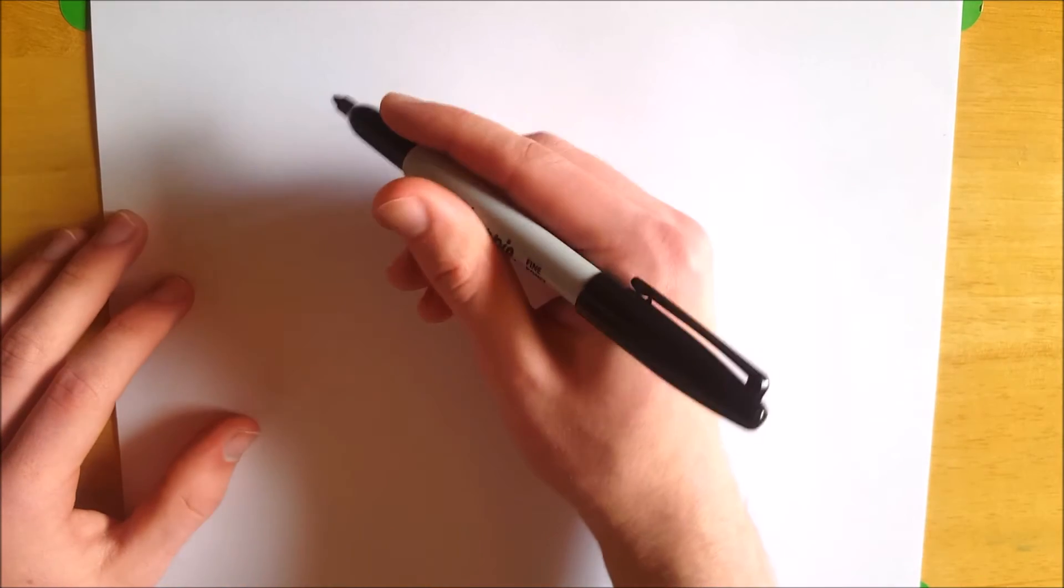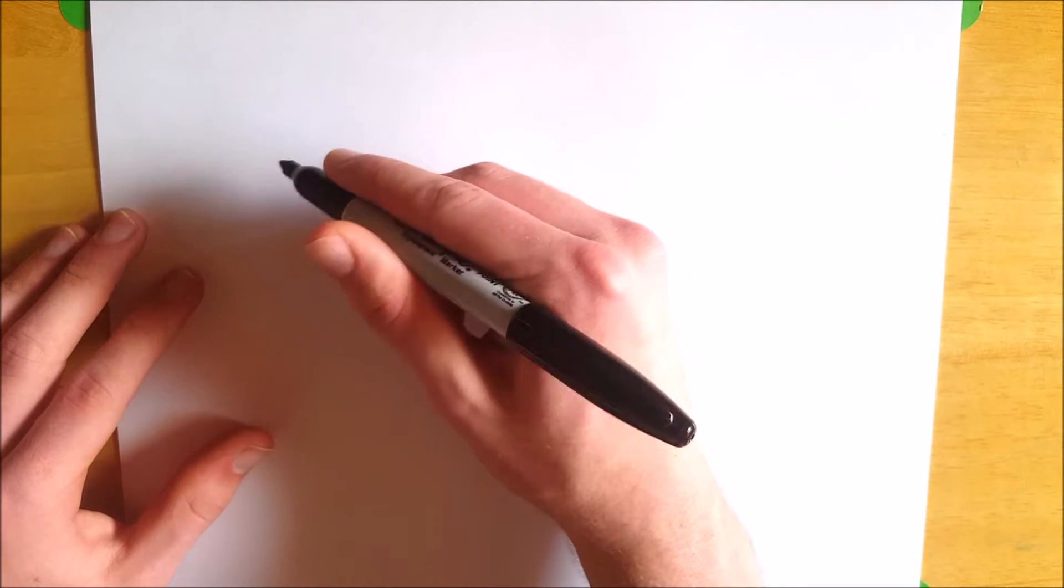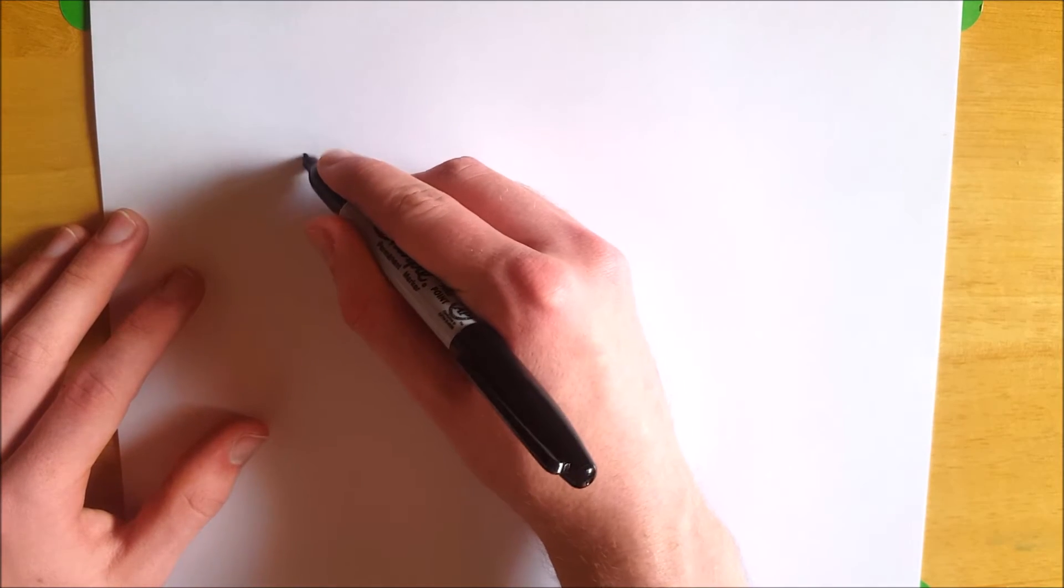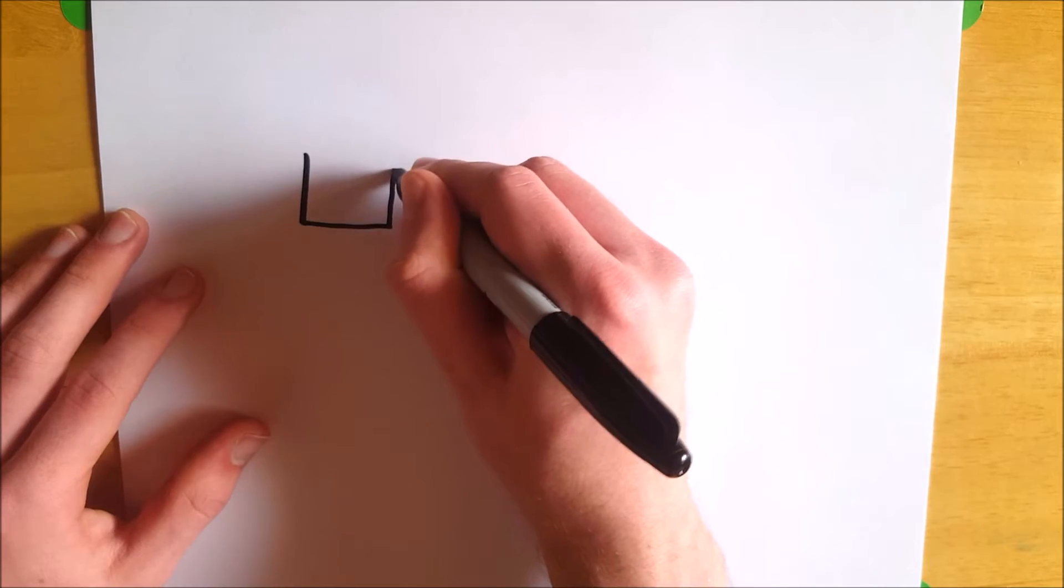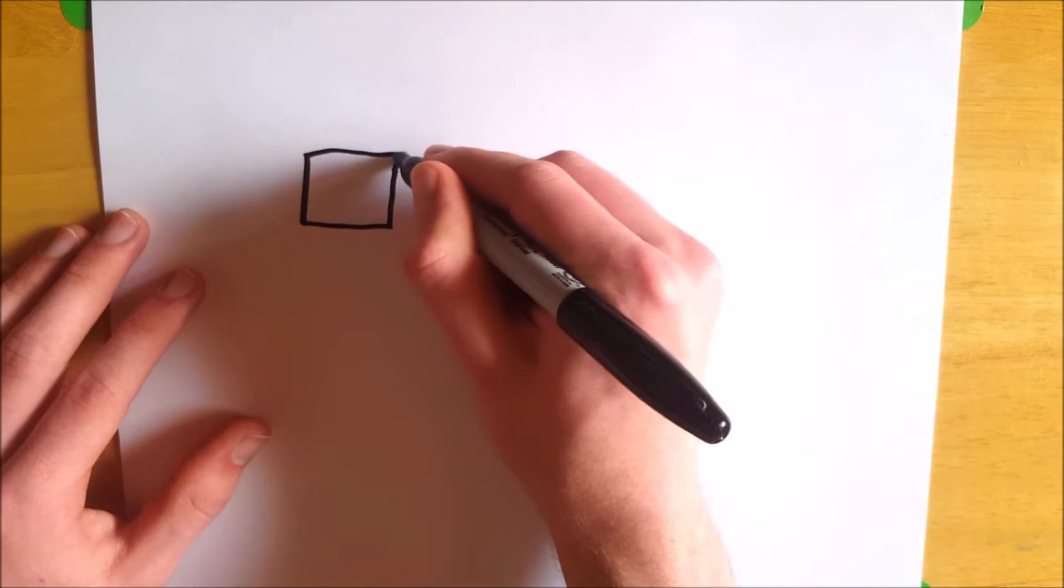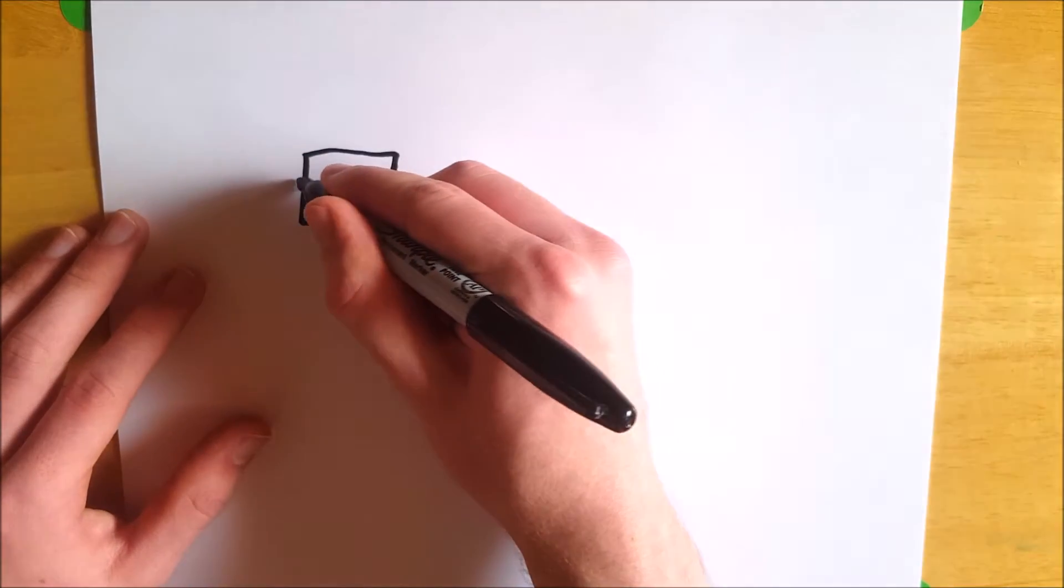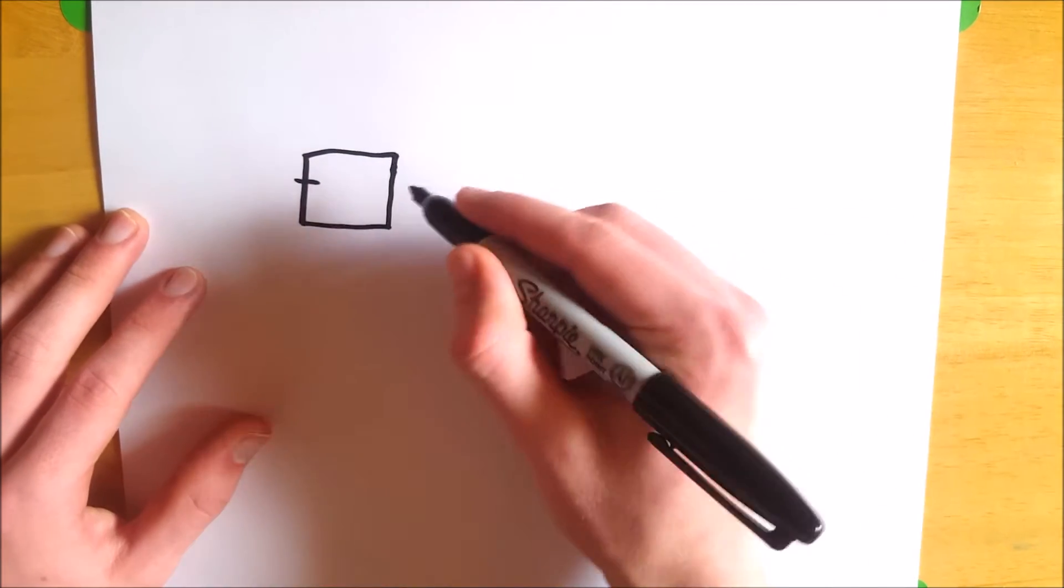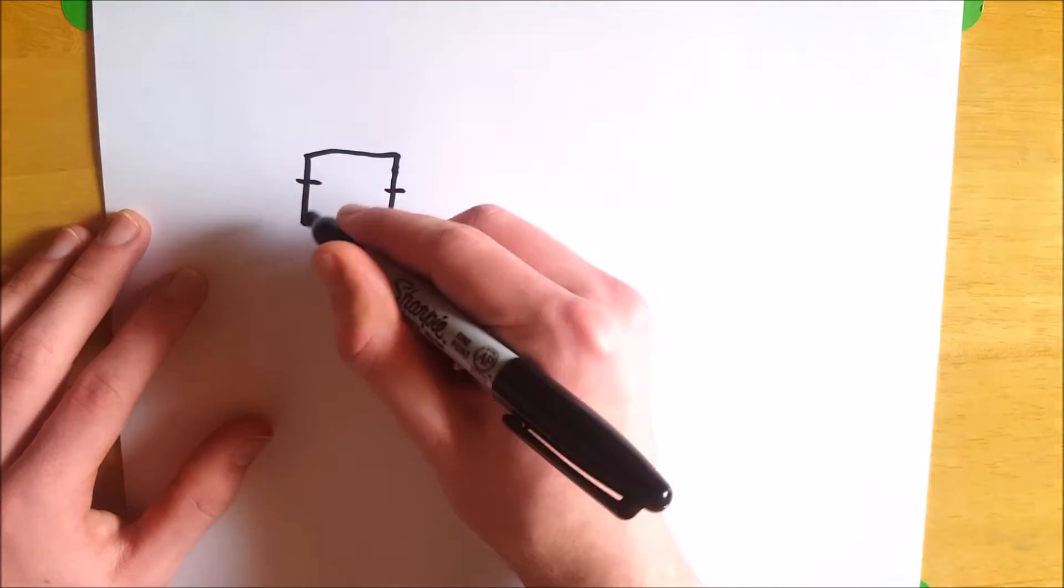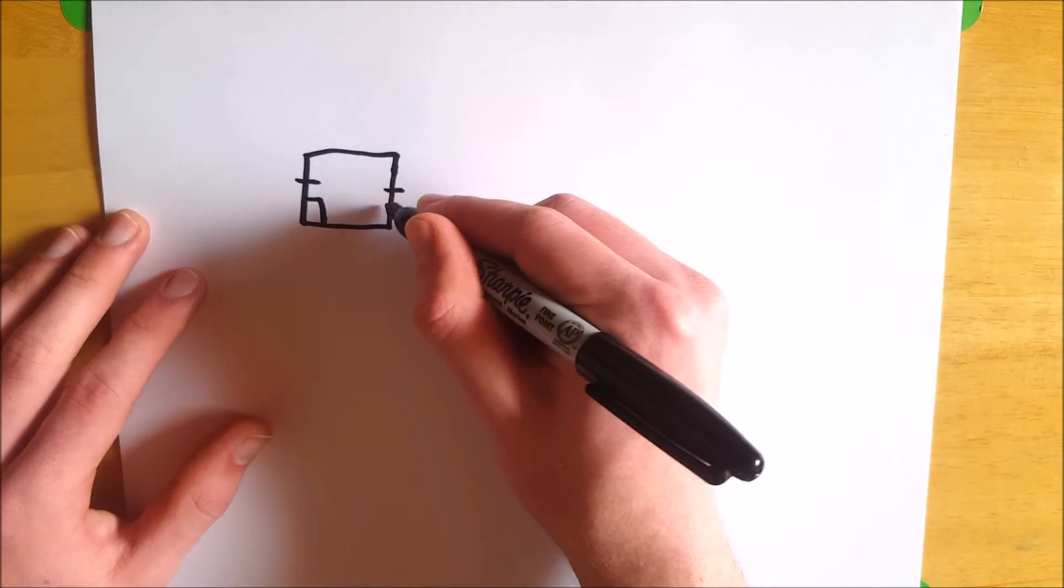So a Saccheri Quadrilateral is, of course, a quadrilateral, so we've got four sides, with two congruent legs that are perpendicular to the base. So this side, or leg, is congruent to this side, or leg, and they're both perpendicular to the base.